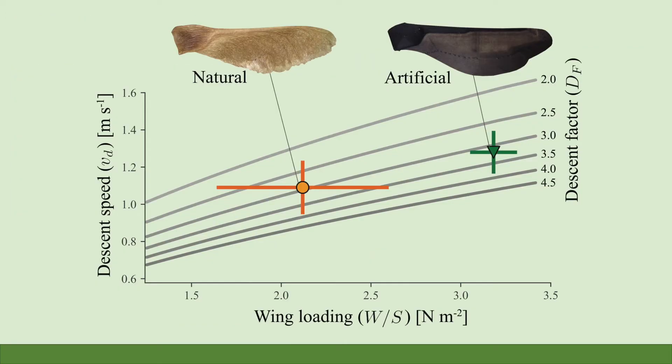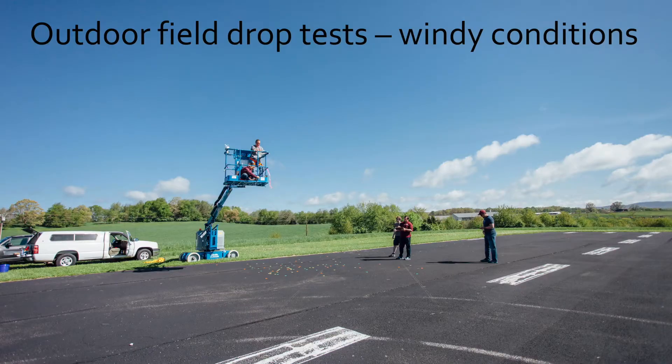When we plot the descent speed versus the wing loading, we find that they fall on the same curve of descent factor, a dimensionless number that represents the seed's aerodynamic efficacy.